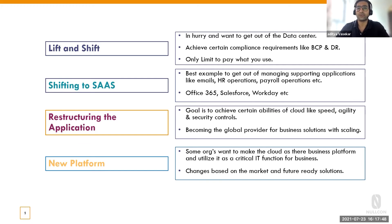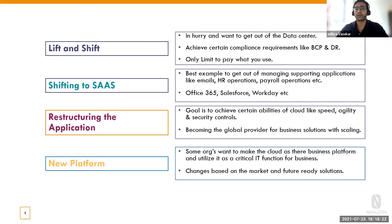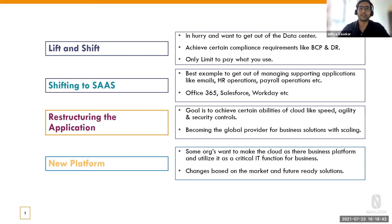Only pay for what you use, but at some point you need to configure exactly how to use it. Shifting to SaaS is another model — within a big organization, there are many applications like email, payroll, HR operations, all those things. Those can be shifted to SaaS offerings from different organizations. You don't have to worry about how to manage your email servers, how to secure them, how to increase space. I remember from my early days, mailboxes used to flood out and we'd need to request extra space — that was a nightmare. Those kinds of problems are pretty easy to solve using SaaS offerings.